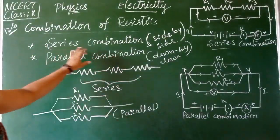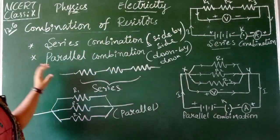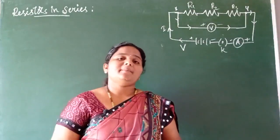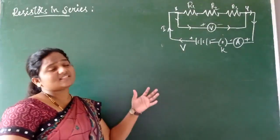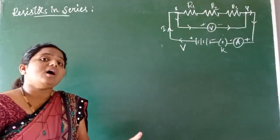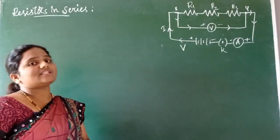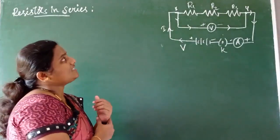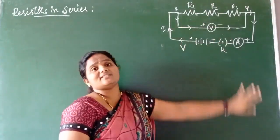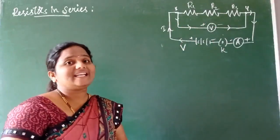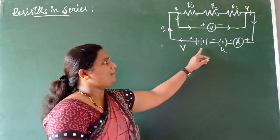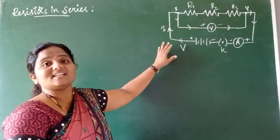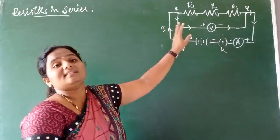Now we will see the resistance of a series combination — resistors in series. When different resistors are connected in series, we study what happens to the current value and what the equivalent resistance is. This can be understood through a simple activity: join three resistors R1, R2, and R3 in series using a battery, plug key, ammeter, and voltmeter. This is a series combination containing three resistors.